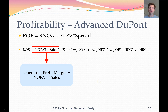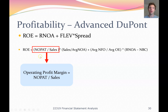Here is the Advanced DuPont Analysis formula. We start with return on equity, and we say return on equity is equal to RNOA — return on net operating assets — plus FLEV (financial leverage) times spread. We'll break down each of these terms one by one.